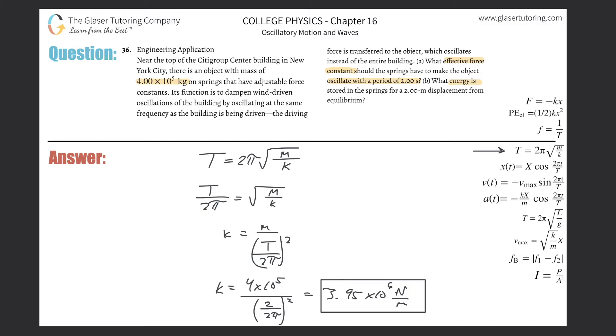What energy is stored in the springs for a 2-meter displacement from equilibrium? So we're talking about energy, spring energy. That's simple. I mean, this is just a run-through now. So potential energy that's inherent in a spring will be equal to 1 half times the force constant multiplied by the displacement of that spring squared.